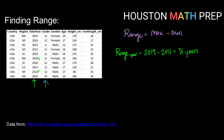Looking at our next quantitative data, that would be the grade. So our range for the grades — I need to find my max and subtract my minimum. My maximum appears to be grade 12, and my minimum for this data set appears to be grade 8. So 12 minus 8 gives me 4. The grade range here is 4.